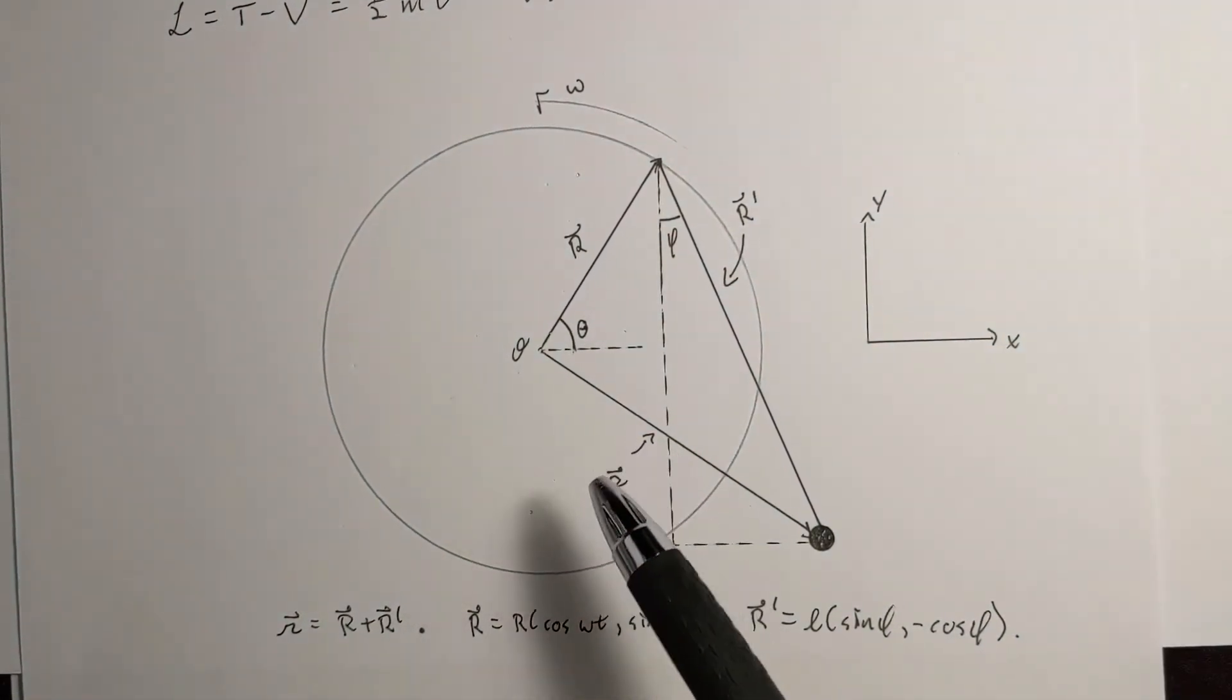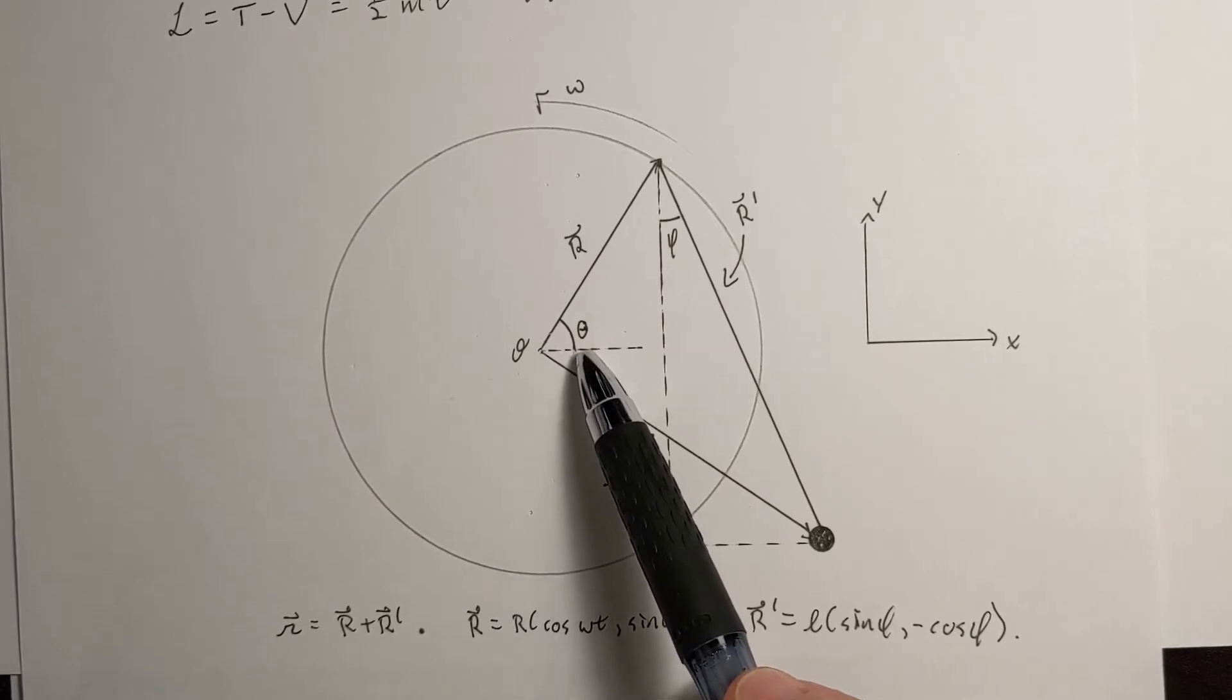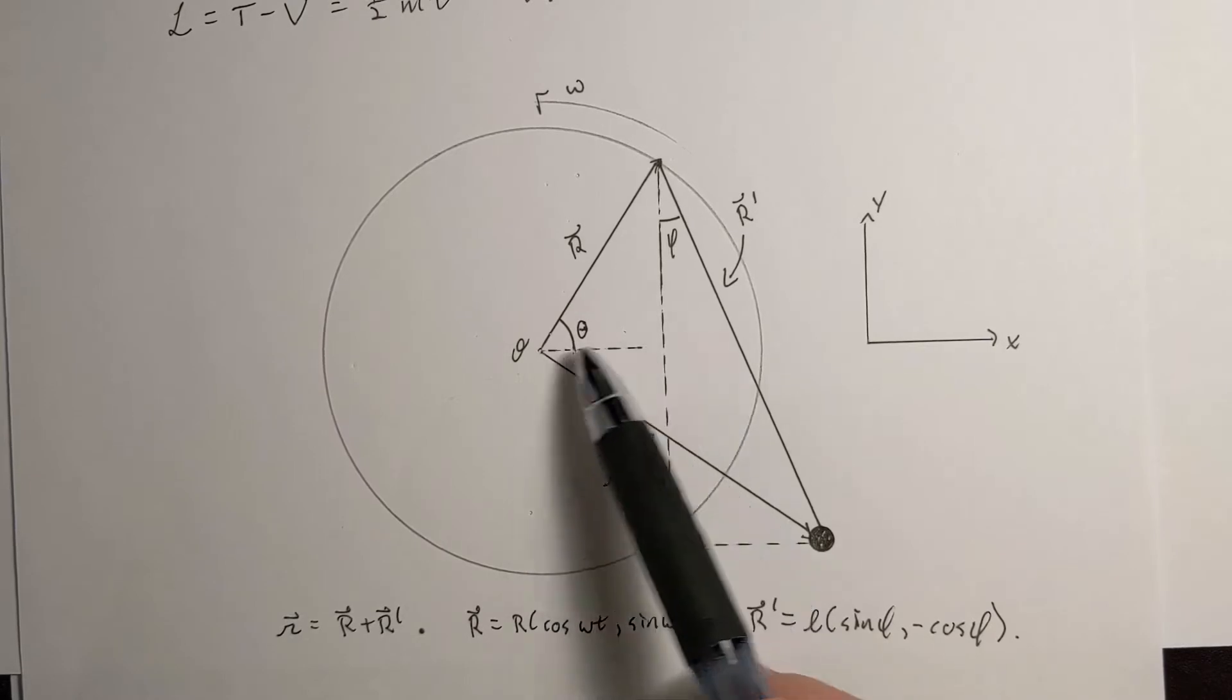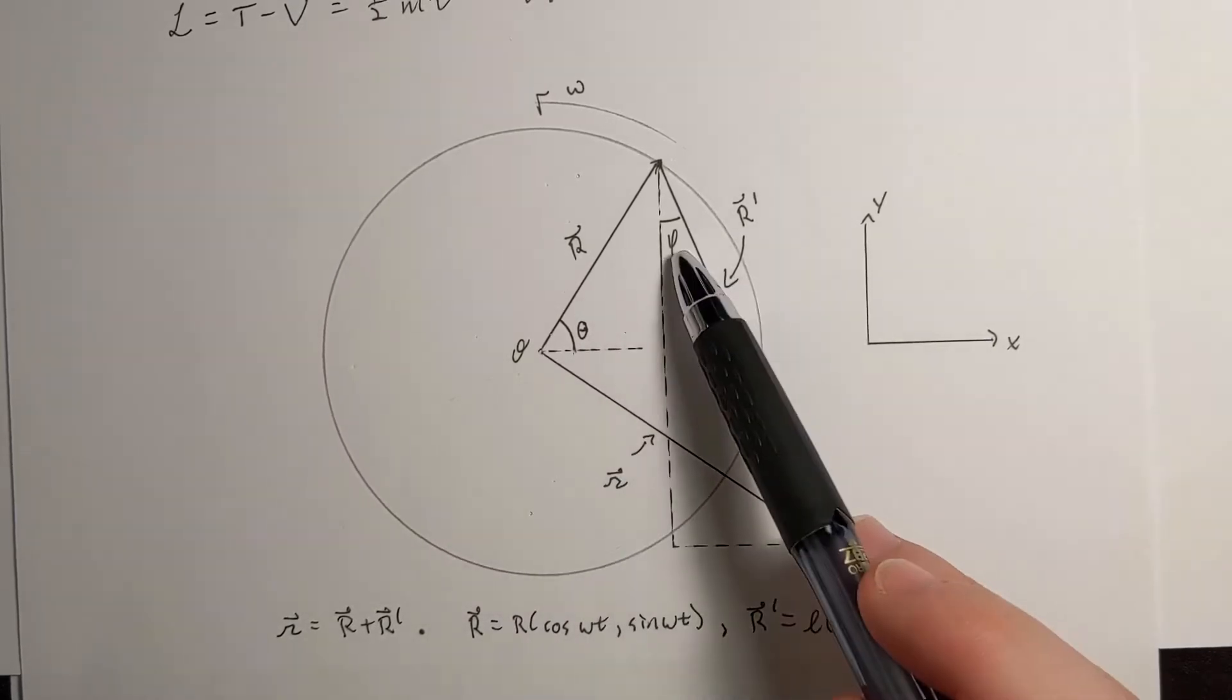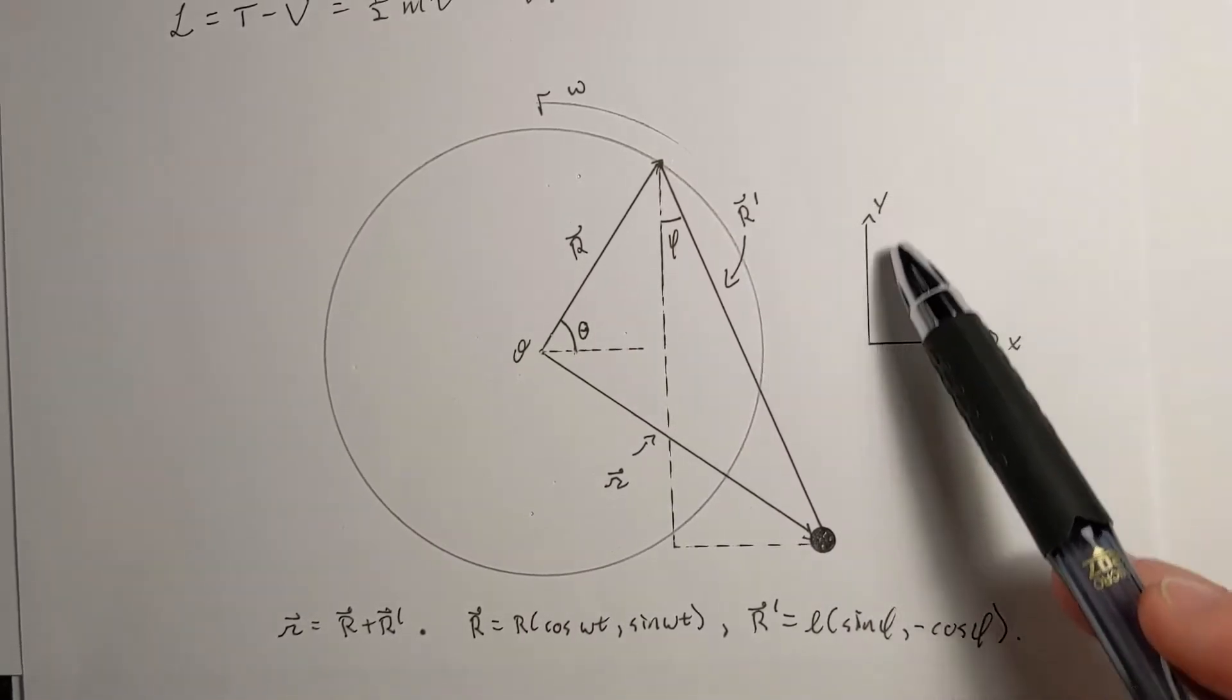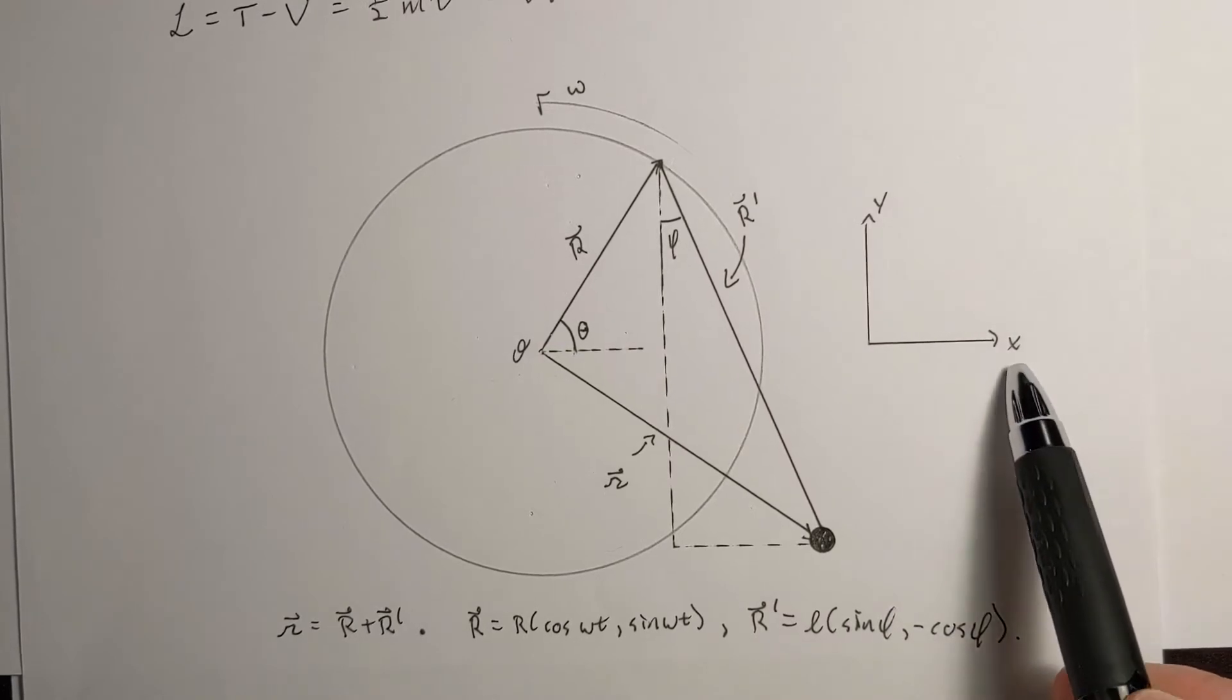So I'm going to use a body diagram here. I'm going to define the center of the disk as my origin, and I'm going to define an angle theta, which is the angle made with respect to the horizontal. Phi is the angle the pendulum makes with the vertical. I'm going to define this as my positive y direction, that is to say up, and my x direction is positive to the right.